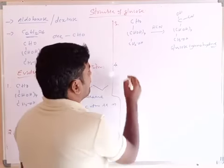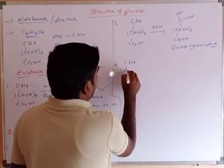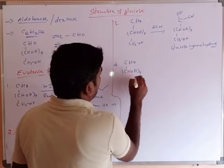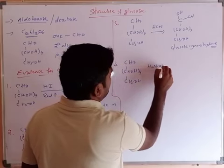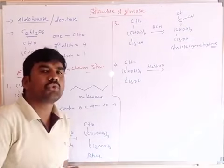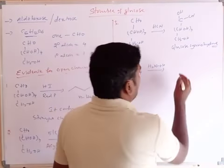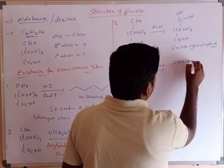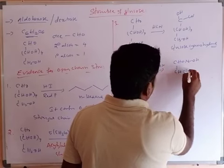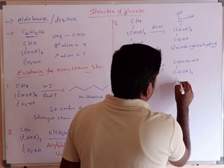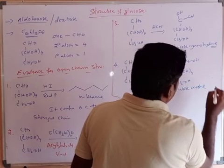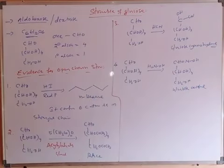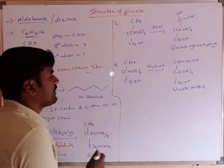Also, glucose reacts with hydroxylamine (H2NOH) to form glucose oxime. The structure of glucose oxime shows C double bond N–OH replacing the aldehyde group (CHO), with CHOH groups and CH2OH. Glucose oxime confirms the presence of the carbonyl (aldehyde) group in glucose.